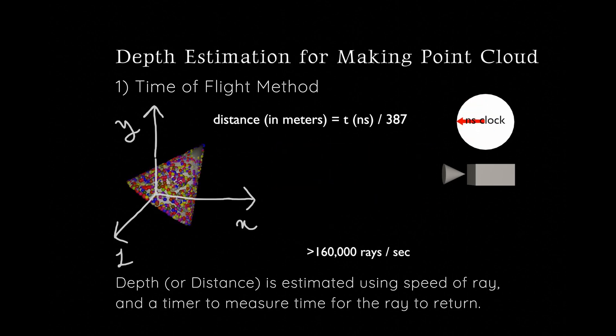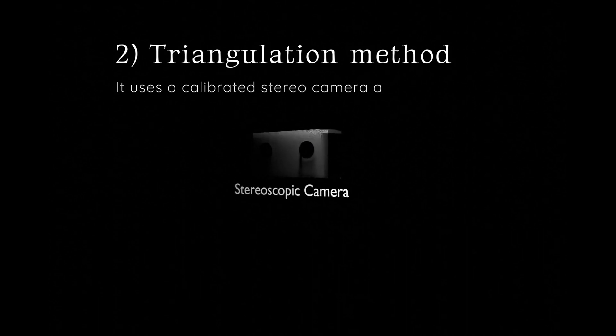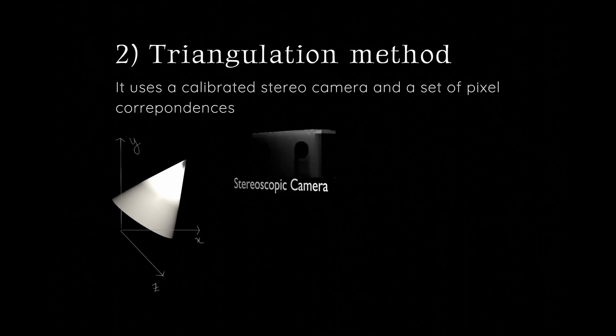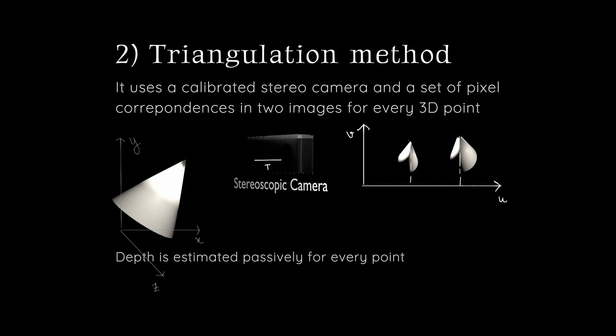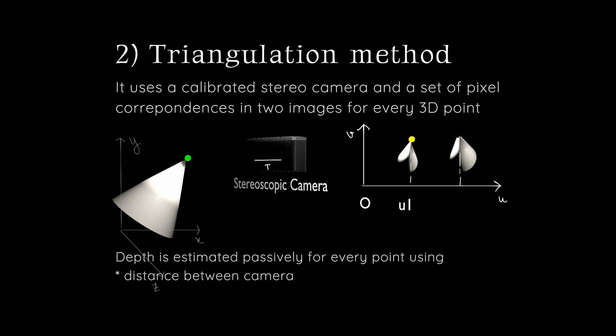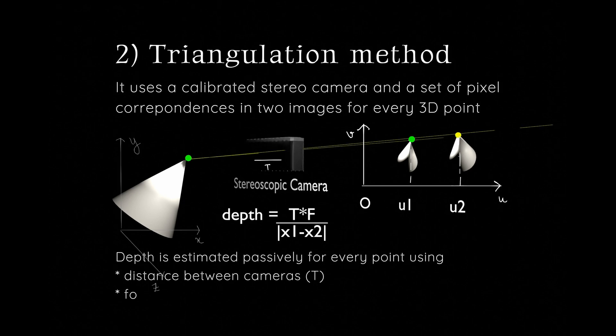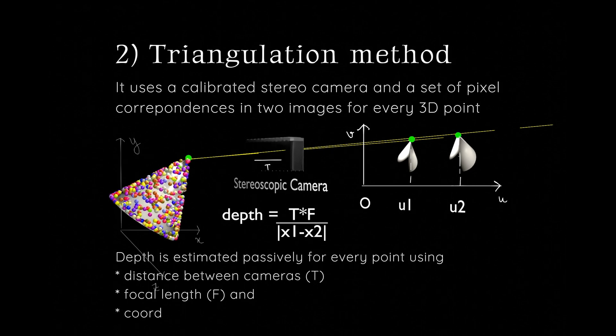The second method is the triangulation method. In this, we use a stereoscopic camera and a pair of stereo images, and then we need a set of pixel correspondences in the two images that represent the same 3D point. Using the set of values and a simple formula based on trigonometric equations, we can calculate the depth passively for every point of the image. The formula uses distance between the stereo cameras, focal length, and the pixel coordinates u and v of the set of pixel correspondences.